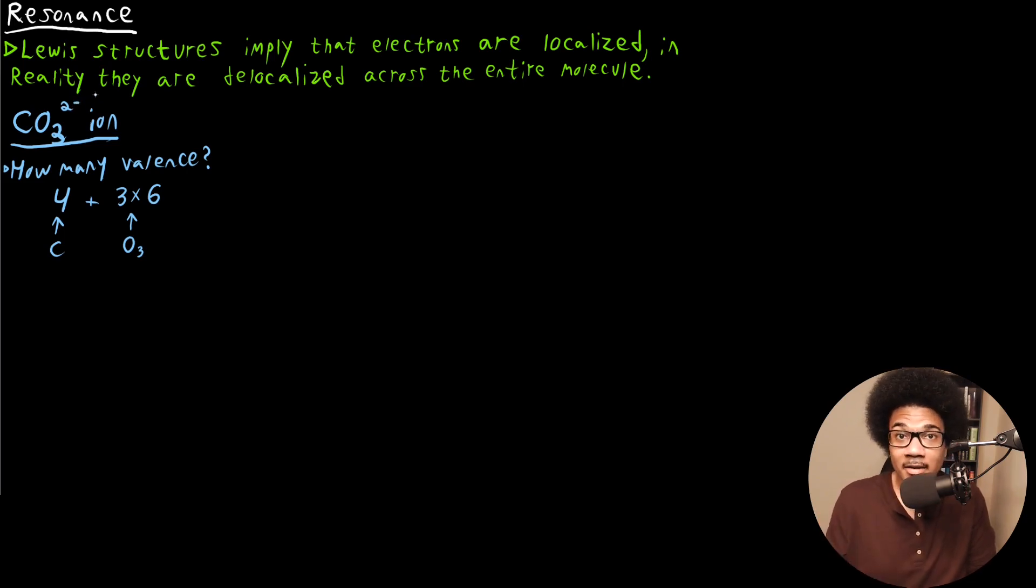Now we also have a negative two charge. Remember what I said with ions. If you have an ion, that means you need to either add or subtract electrons. For an anion, a negatively charged molecule, that means we need to add electrons to this valence total. So that means we're going to have to add two here. So four plus three times six plus two, that's going to give us a total of 24 valence electrons. And let me annotate this plus two accounts for the minus two charge, since we have a negative two charge overall, we have to add those two electrons.